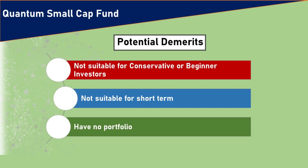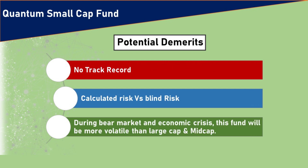Because there is no portfolio, we don't know where this fund will invest, what sector allocation it will have, or what stock selection it will make. It is better to see the portfolio, analyze the risk, and then invest. Since there is no portfolio, we cannot do any analysis. This fund is an NFO, so there is no track record — unlike an existing small cap fund where you could check performance over the last one, two, or three years, including during the pandemic crisis.